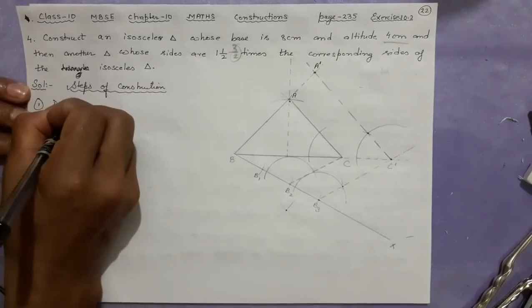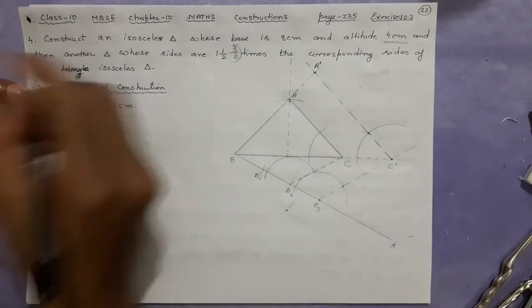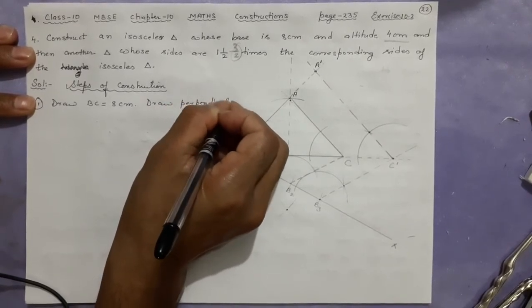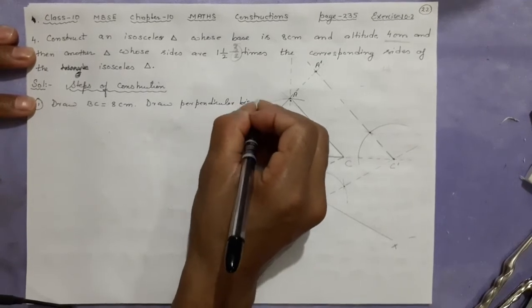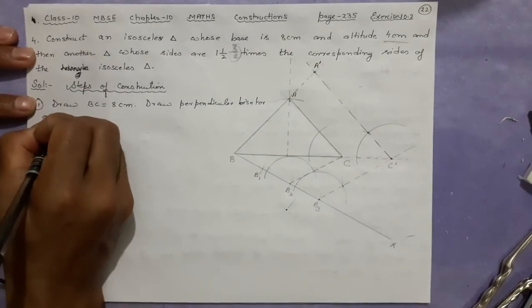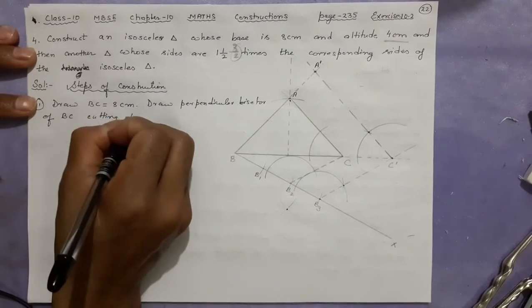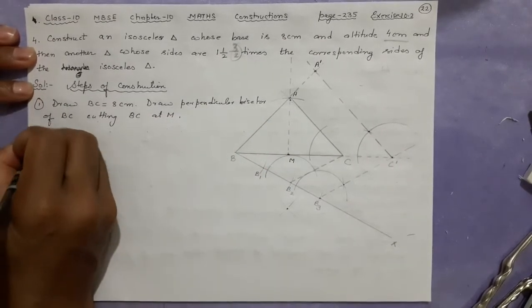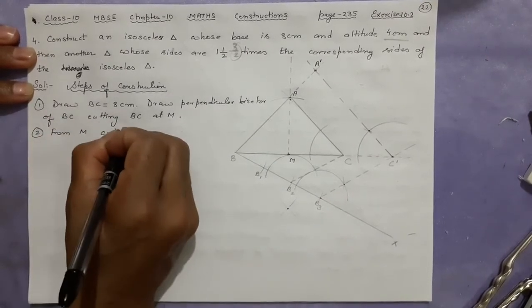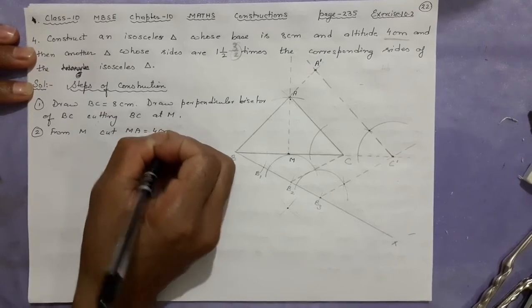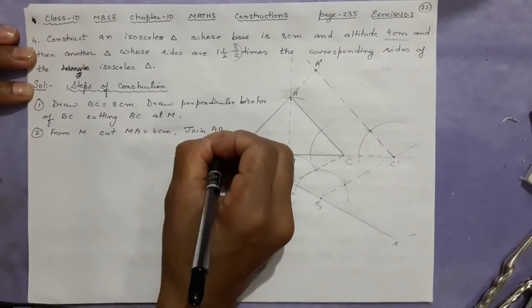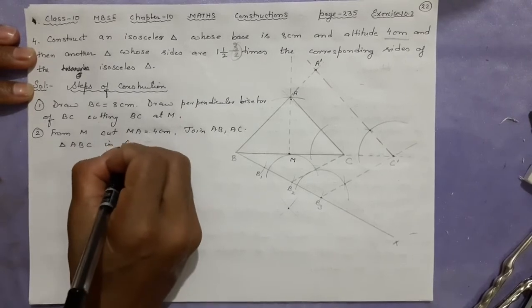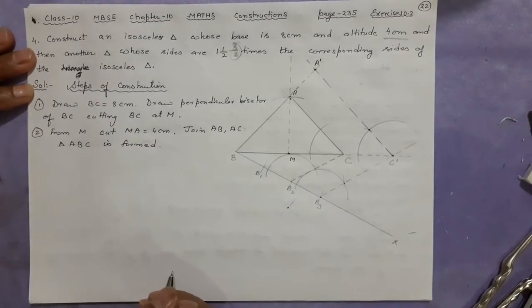Number one: Draw BC equal to 8 centimeters. Number two: Draw perpendicular bisector of BC cutting BC at M. Next step: From M cut MA equal to 4 centimeters and then join AB, AC. Then triangle ABC is formed. No need to write it is an isosceles triangle, it is understood like that.